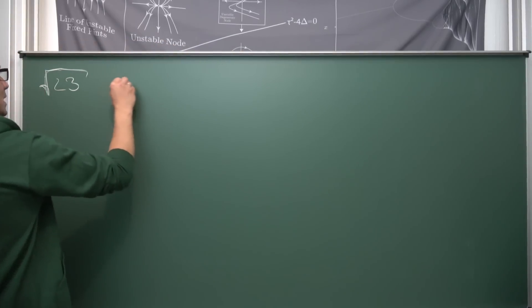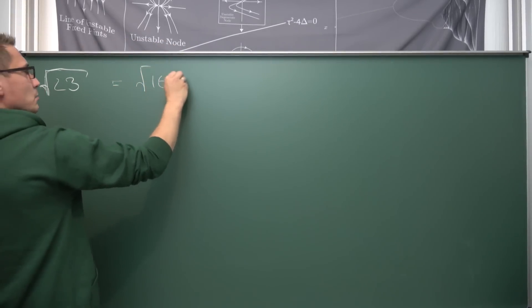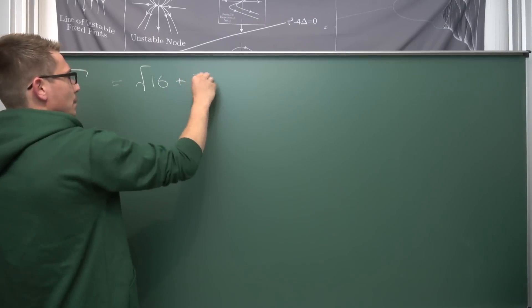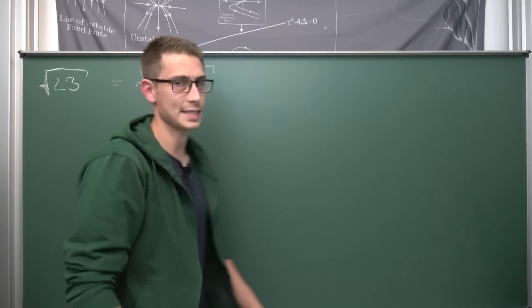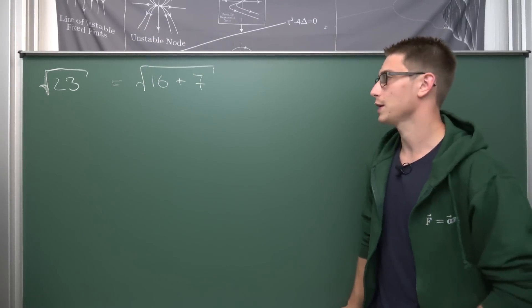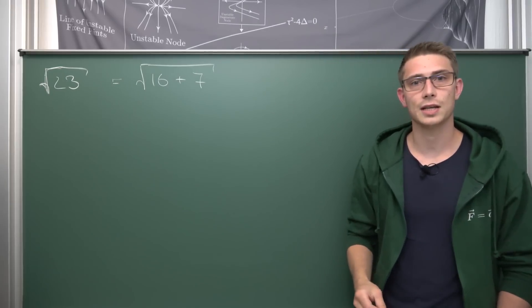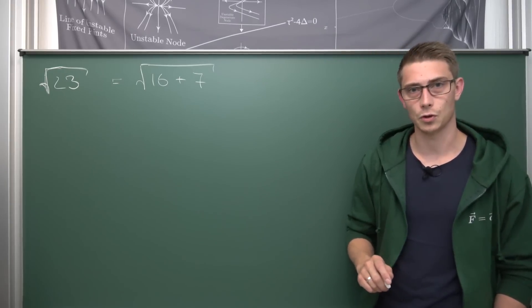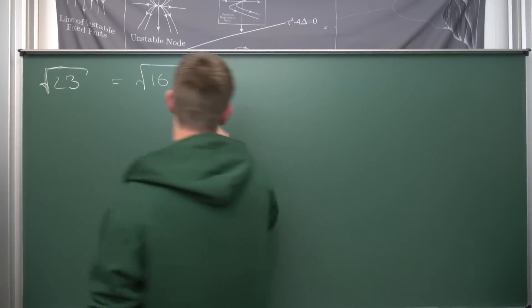The nearest perfect square below 23 is 16. Namely, 23 is nothing other than 16 plus 7 — with 7 still needed to reach 23. What you are going to do for this trick is take your perfect square and take its square root. Square root of 16 gives you 4.